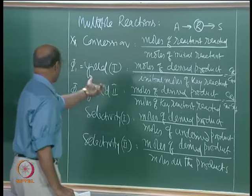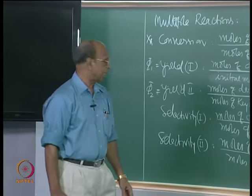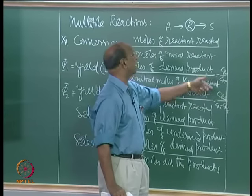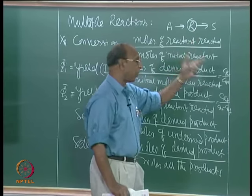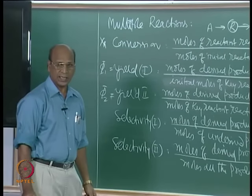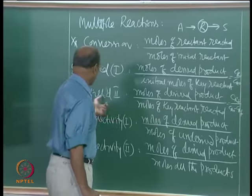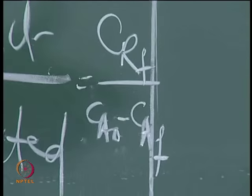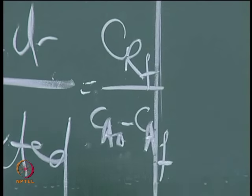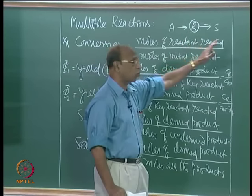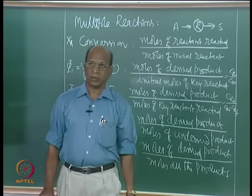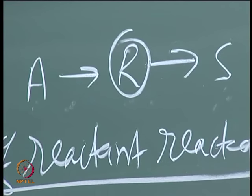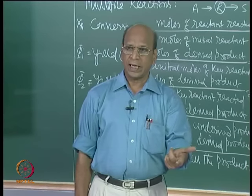Now, the method for finding yield and selectivity — these are all in terms of moles or concentrations. We need to find CR/CA0. If I ask what is yield 1, it is CR/CA0. Yield 2 is CRF/(CA0 − CAF). In the third chapter, you already derived an equation for A→R→S, so you already have CR/CA0 — and that is exactly yield 1.